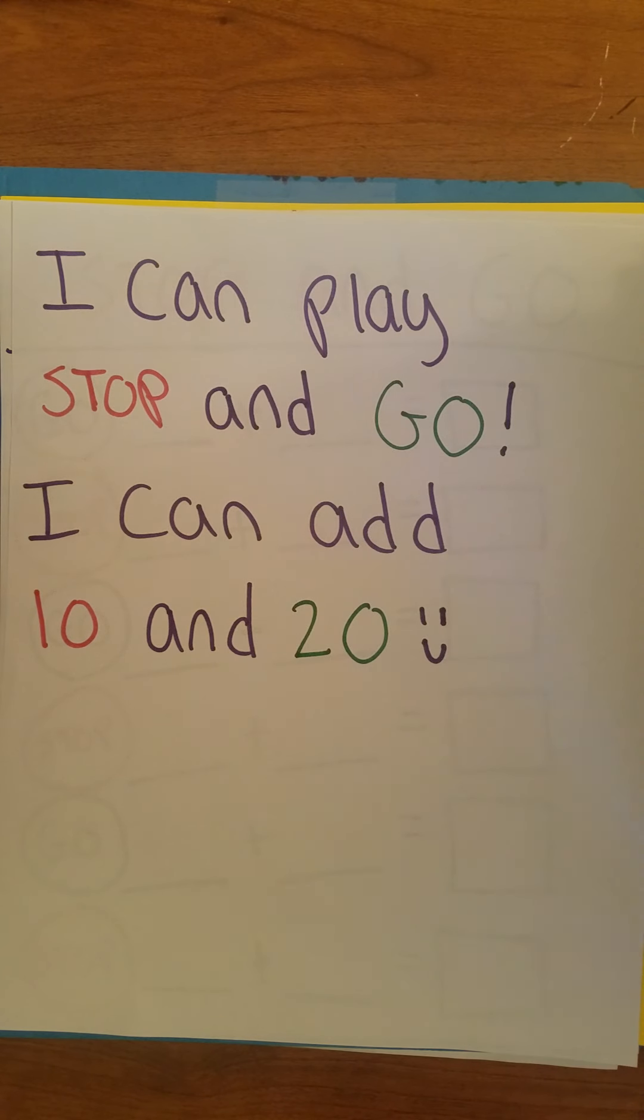Now adding 10 and 20 is a little bit different than adding other numbers because we can use our ability to skip count by 10 to add by 10 and 20 quickly without having to write anything down or use any manipulatives or tools like a number line. When we're able to solve problems quickly without using any tools, we call that mental math, like we talked about earlier this week with our doubles facts and our pairs that make 10.